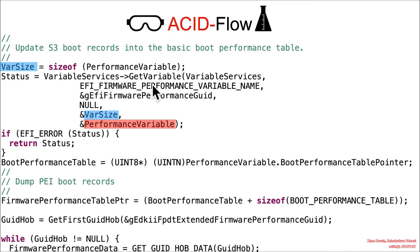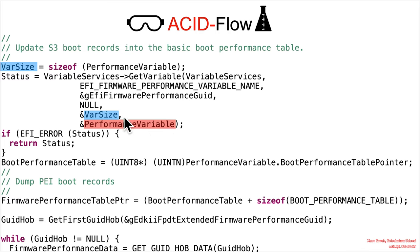In previous examples, we had focused on the notion of get variable acting very much like a mem copy and therefore being subject to potential buffer overflows. But in this case, we've got a fixed size — size of performance variable used as the input size — and the output buffer is the performance variable. So either this is going to be enough size for reading in the data, or it's just going to error out and exit out of this function. So that's not the source of problems here.